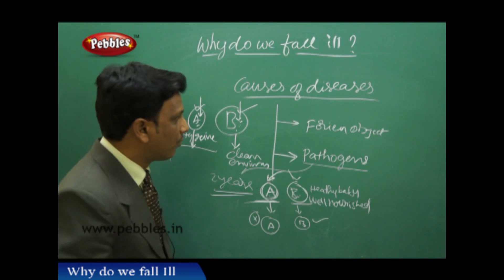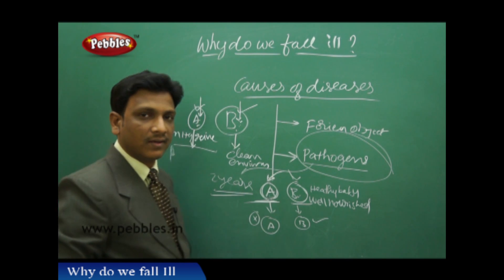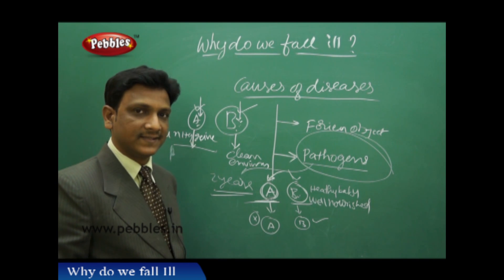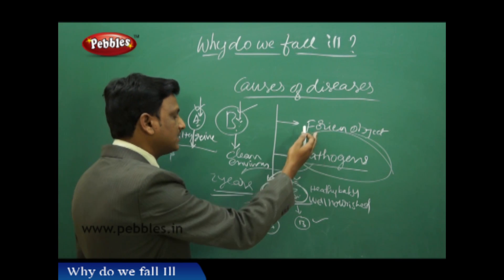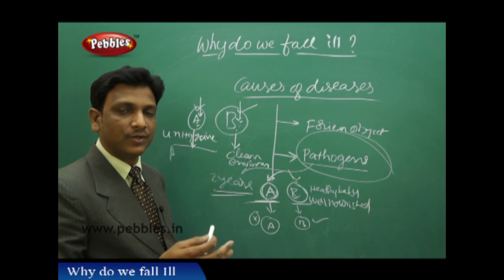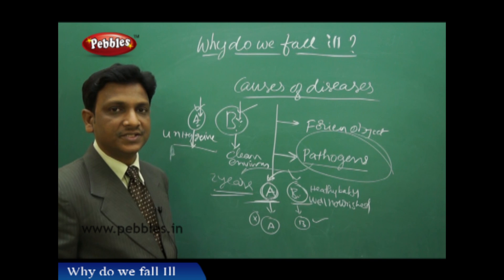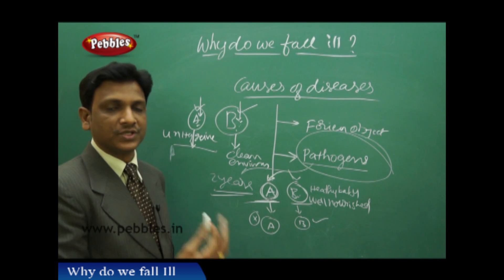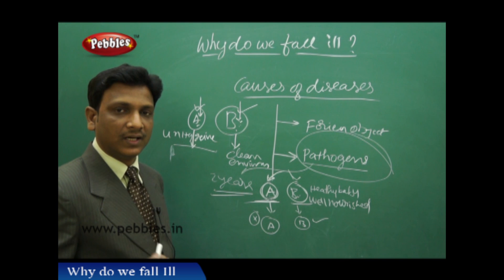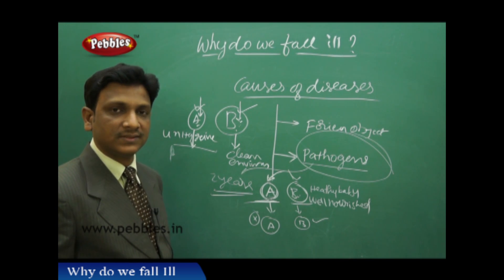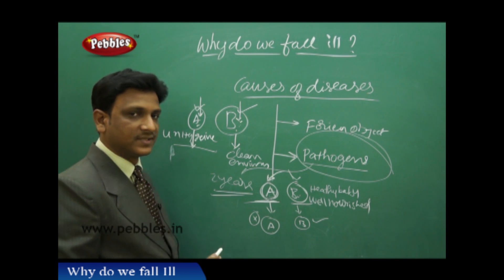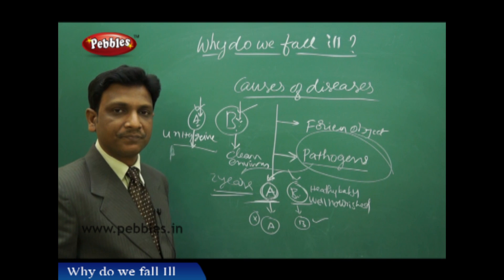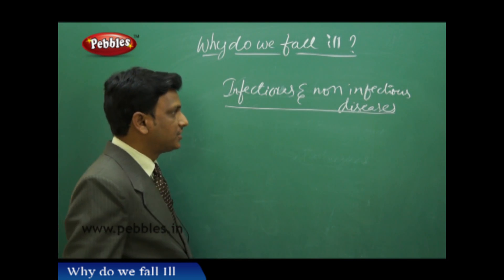So microorganisms, foreign objects, chemicals, or pollutants are the primary causes of disease, but they do not affect everybody — only a few — because of secondary and tertiary causes. The secondary and tertiary causes are social issues like food poverty, unemployment, poor hygiene, lack of sanitation, immunity, and genetic factors. These are the basic causes of diseases.